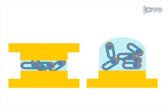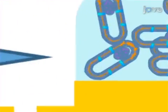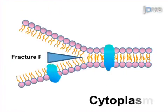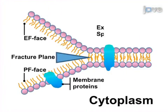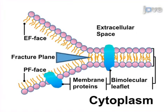Then, the frozen specimen is fractured by remote manipulation at liquid nitrogen cooled temperatures under high vacuum, which splits the membrane through the lipid bilayer, producing an extracellular face and a face that is proximal to the cytoplasmic aspect.